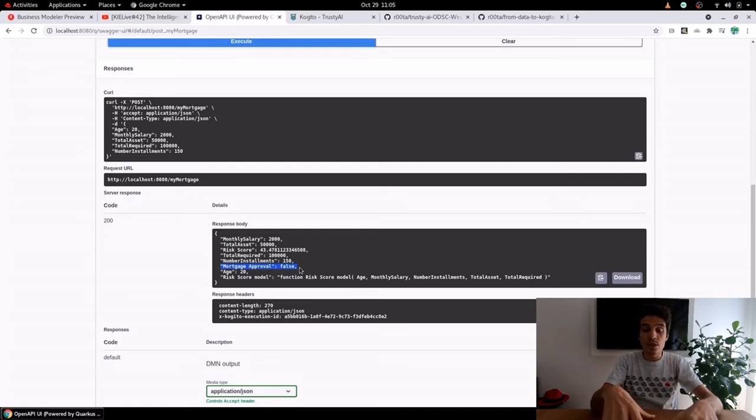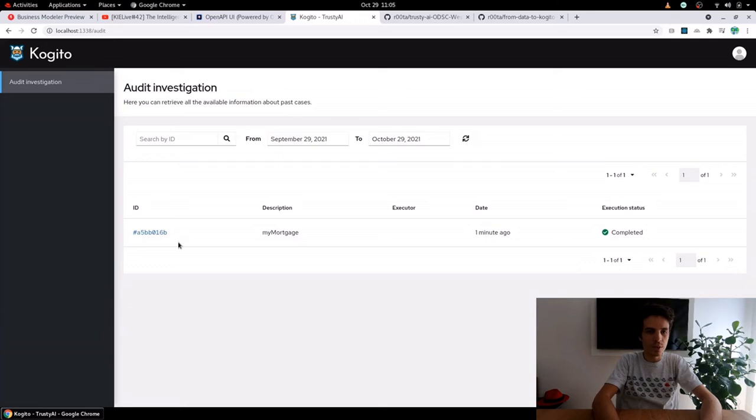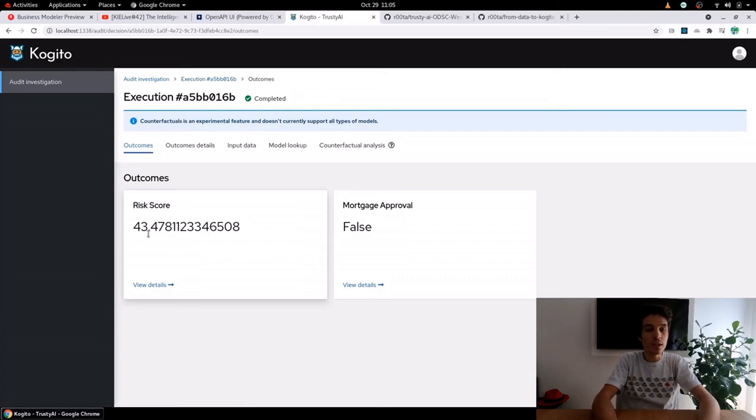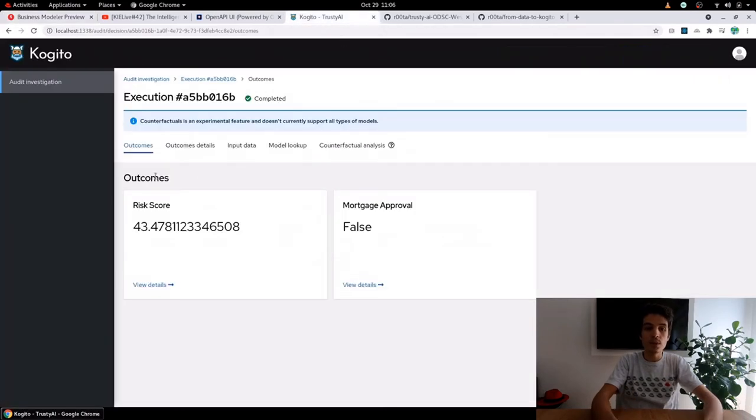Now we can go to the TrustyAI UI. The TrustyAI UI is running under localhost 1338. Let's reload the page because of course no executions were calculated before I executed it. You see here that we have one execution of the MyMortgage DMN model. The date is one minute ago, and the execution status was complete because it was evaluated successfully from an operational perspective. We can drill down to the execution and let's see what were the outcomes, the inputs, the models, et cetera. You remember we had two decisions: the risk score and the mortgage approval decision. And you see we have two outcomes: the risk score and the mortgage approval. We can see both the results. Then we can drill down to the details of the outcomes.